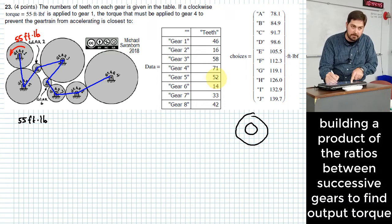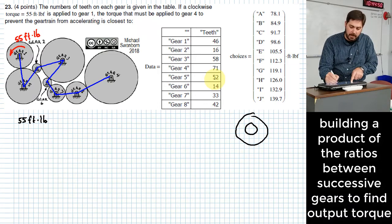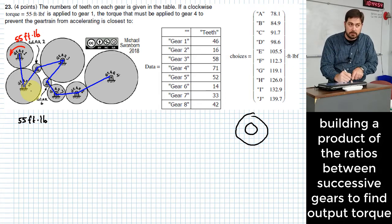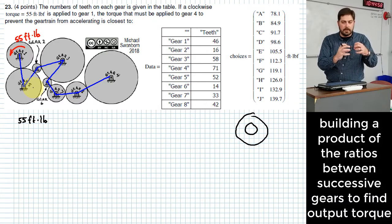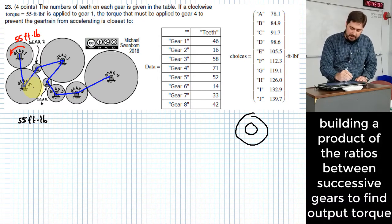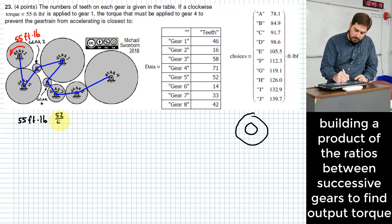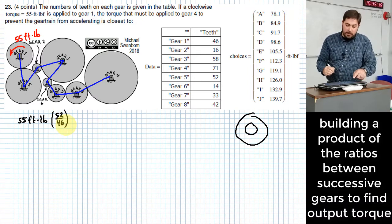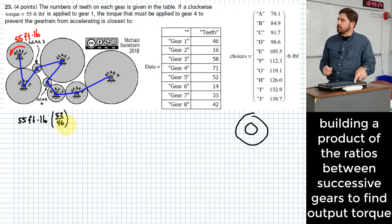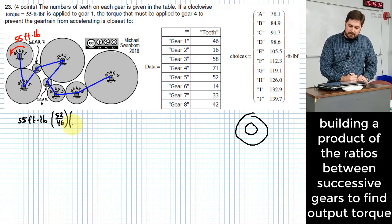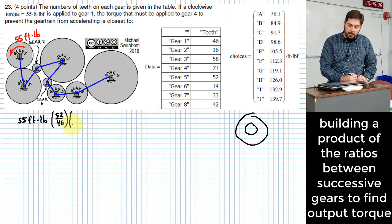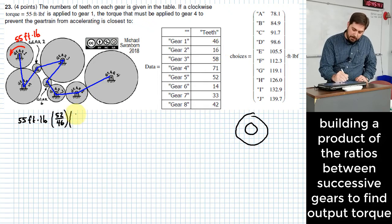You could do a whole bunch of ratios to figure out at each point how did the torque change. Like the first one would be, you'd take 55 foot-pounds and multiply it by what to get the torque at gear five? We have data over here. Gear one has 46 teeth, gear five has 52 teeth. So the torque at gear five should be what? Should it have more torque or less? It's bigger. And when you have two gears that mesh with each other, the smaller one has less torque, bigger one is more. So to find the torque in gear five, I should multiply by 52 over 46.